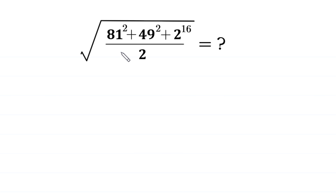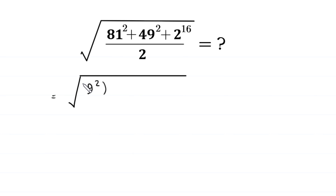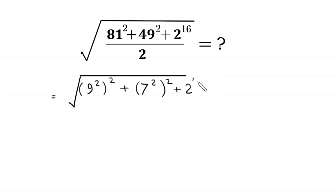This expression can be written as: square root of 81 written as 9 squared whole to the power 2, plus 49 squared written as 7 squared whole to the power 2, plus 2 to the power 16 written as 2 to the power 4 times 4, divided by 2.